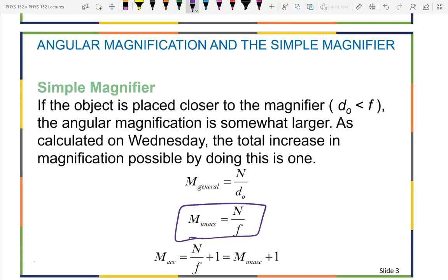If we use full accommodation — straining our eyes so that after an hour they'll be really tired — you increase the magnification by one. Everyone considers that not a worthwhile tradeoff. You can just get an eyepiece with a magnification of 10 instead of 15; just spend a little money and get the 15 for more magnification and less eye strain.